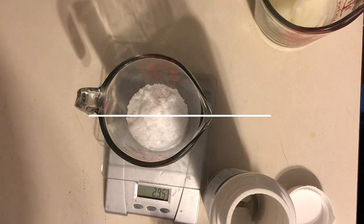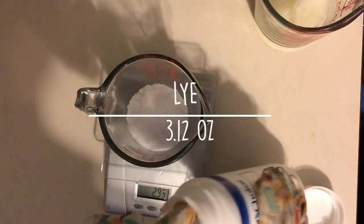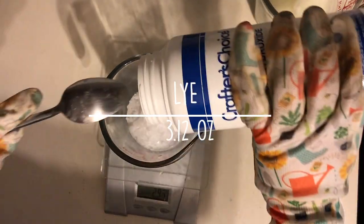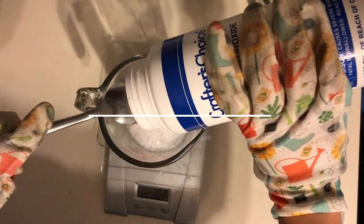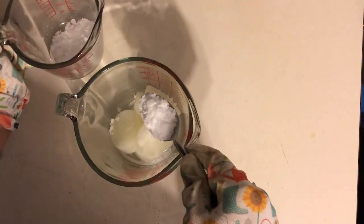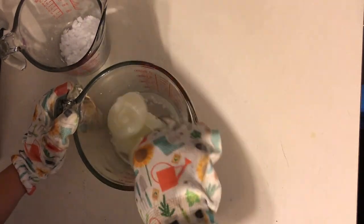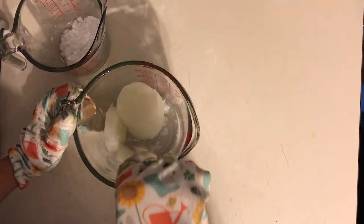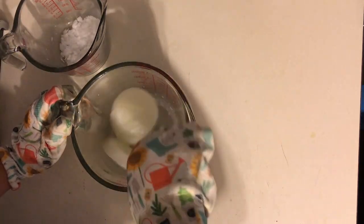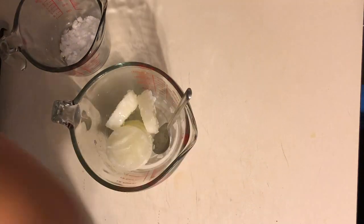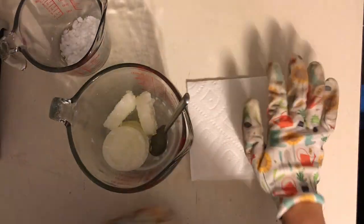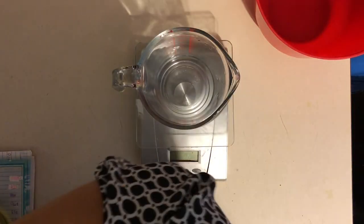I'm measuring out the lye. For this recipe we're going to use 3.12 ounces. Make sure that you're protected. When you mix the lye, mix a few tablespoons at a time to keep the temperature of the milk cubes cool. If your milk starts turning dark brown or curdling, you're getting it too hot.